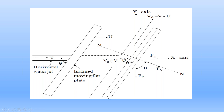The initial relative velocity of the water jet in the direction of force FN is VIR·cos(90 − theta), which equals VIR·sin(theta). Since VIR = V − U, the initial relative velocity of the water jet in the direction of force FN is (V − U)·sin(theta).